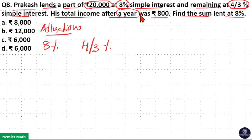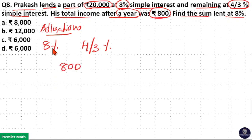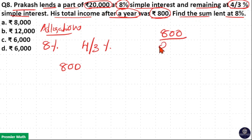The income after a year was 800 rupees. This 800 is received from the 8% and 4/3% portions respectively. So write 800 in the middle. Now, since 8 and 4/3 are in percentage format, we should find the percentage form of this 800, as it is received from the total 20,000 rupees.